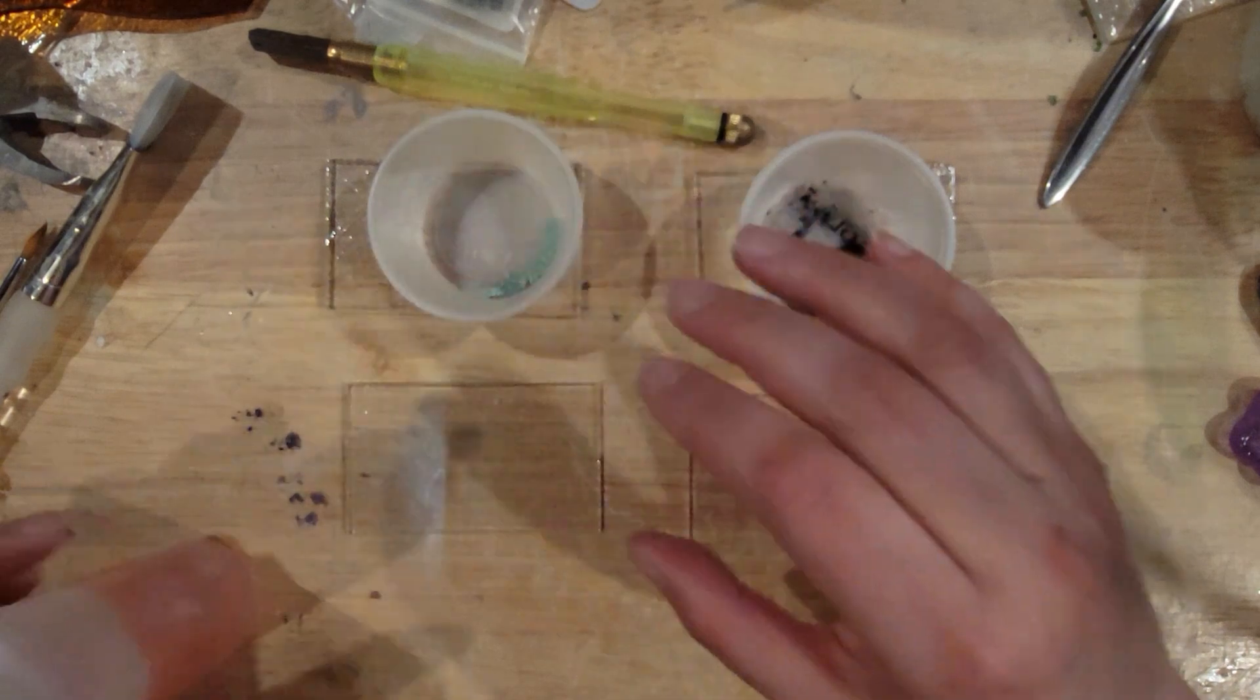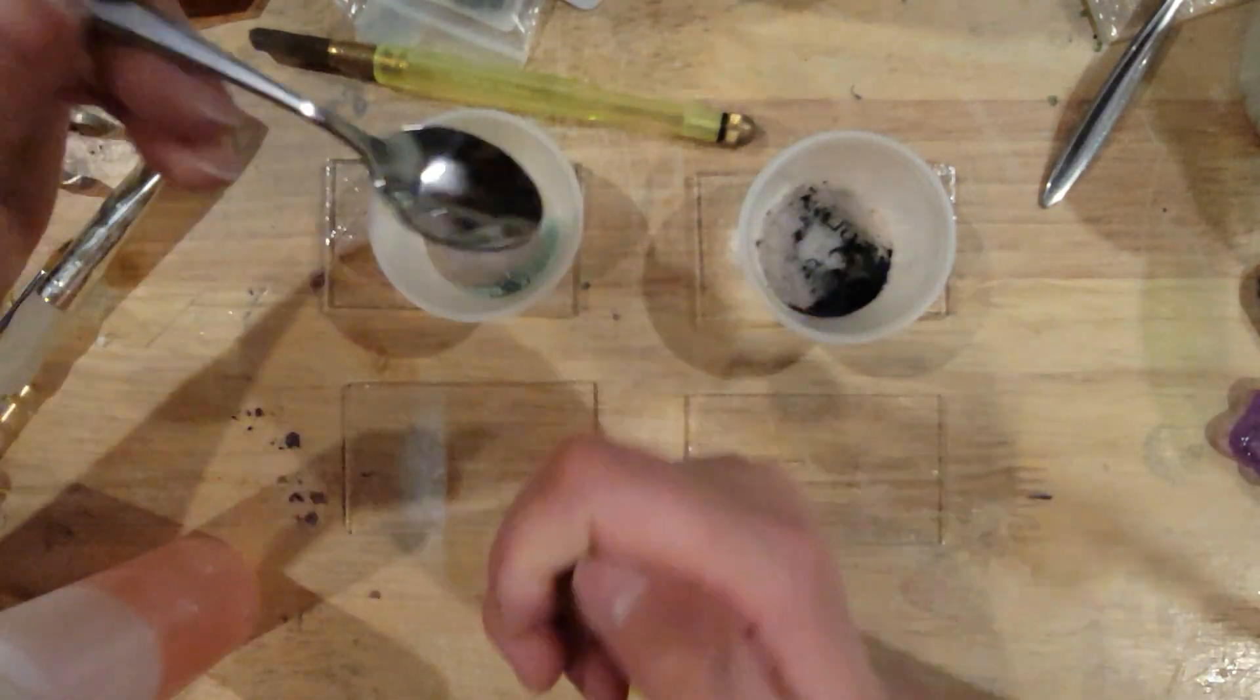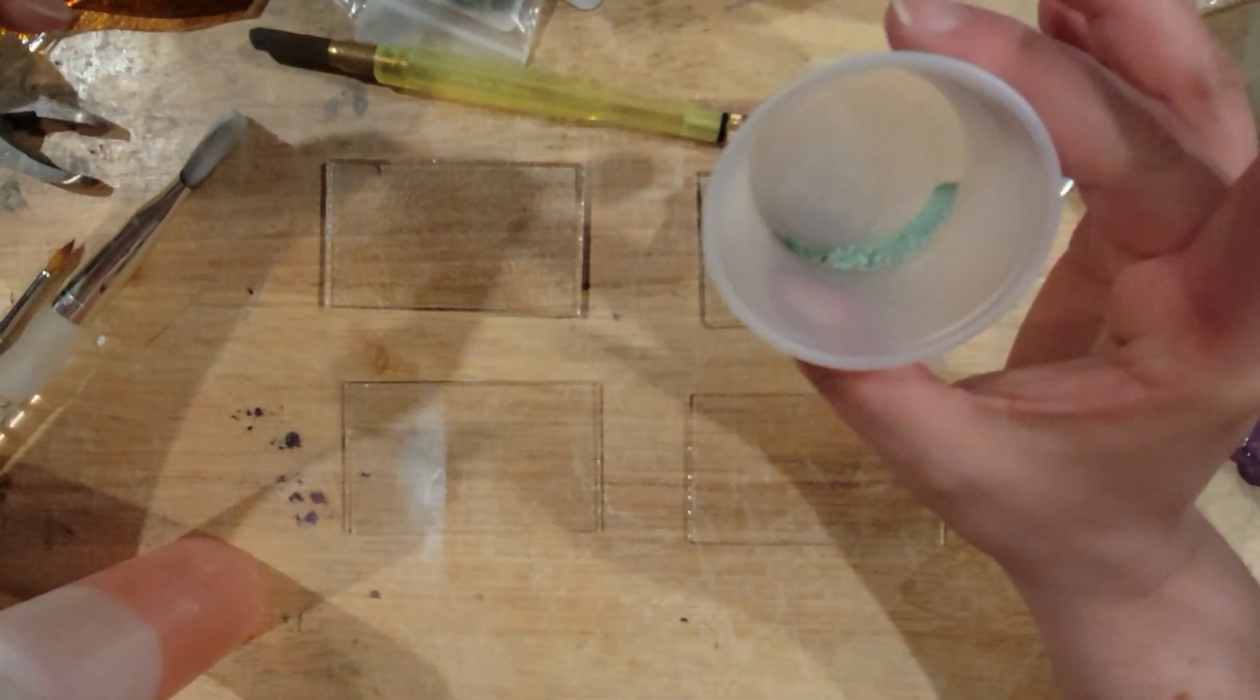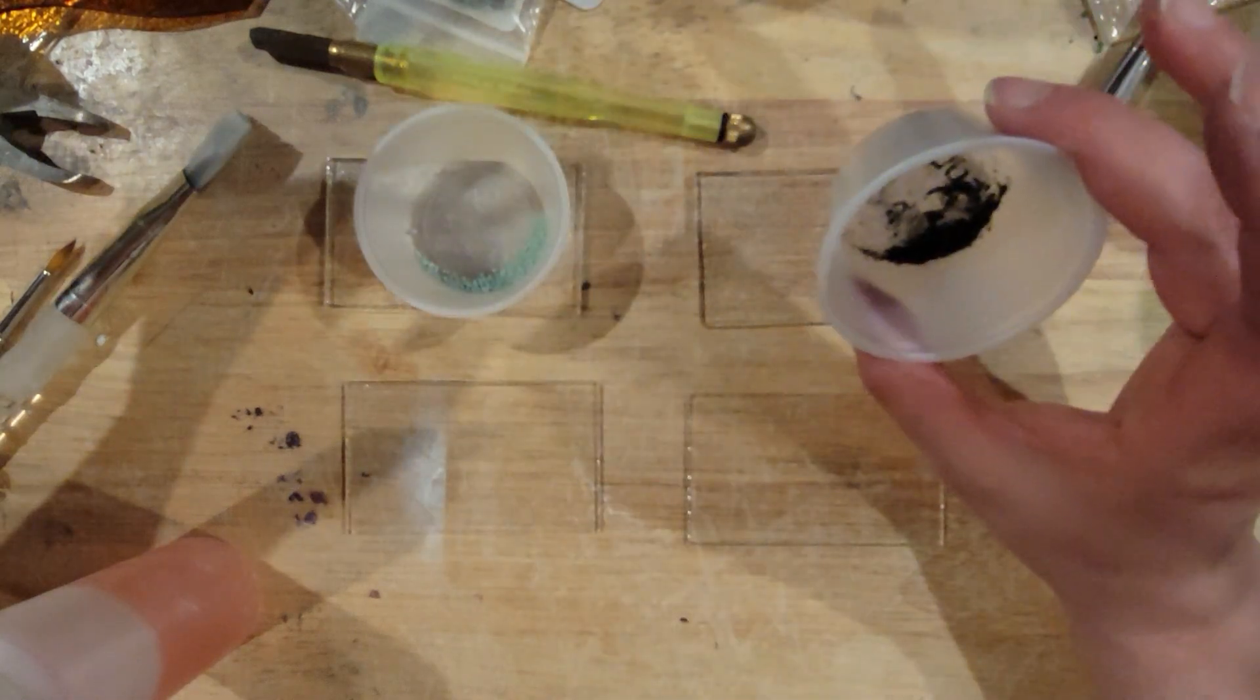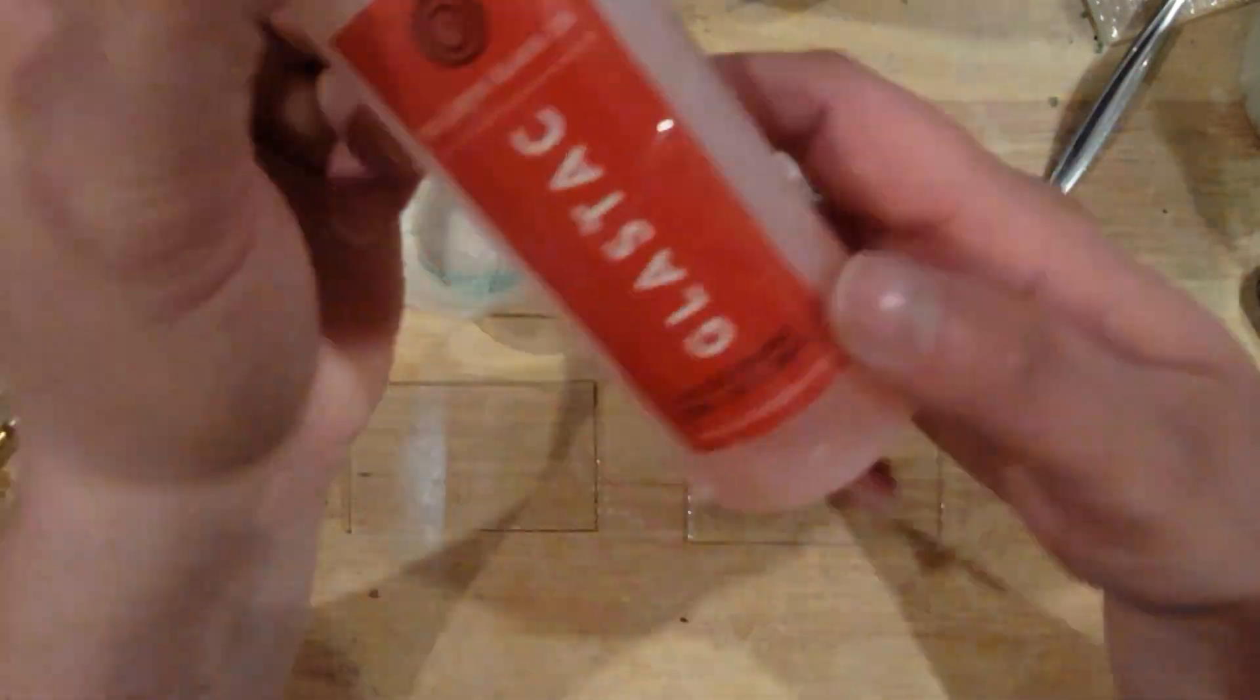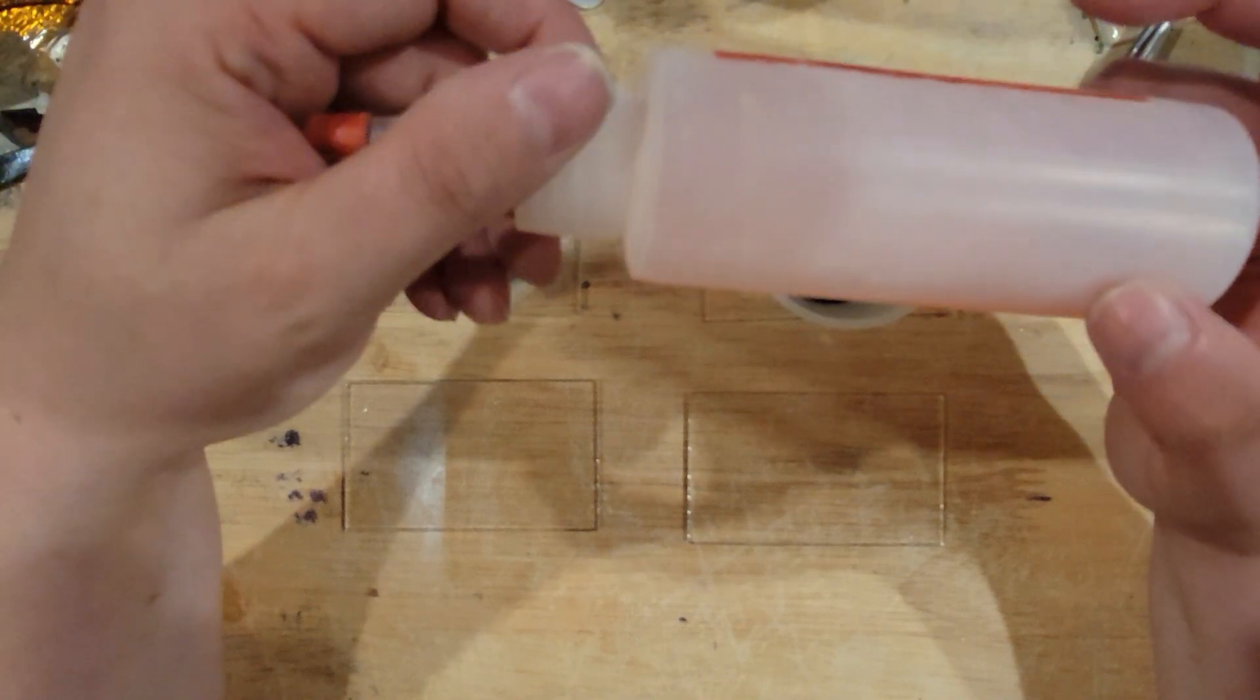So what I'm going to do is I've used my little tiny fruit spoon, and I've just put a little bit of copper carbonate in this container and a little bit of copper oxide in this. I'm going to use some glass tack, the original red glass tack that's super thin.